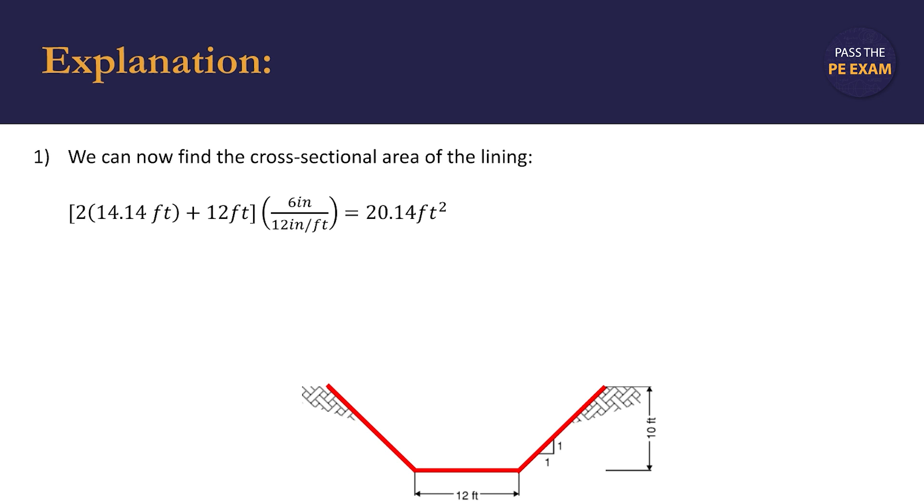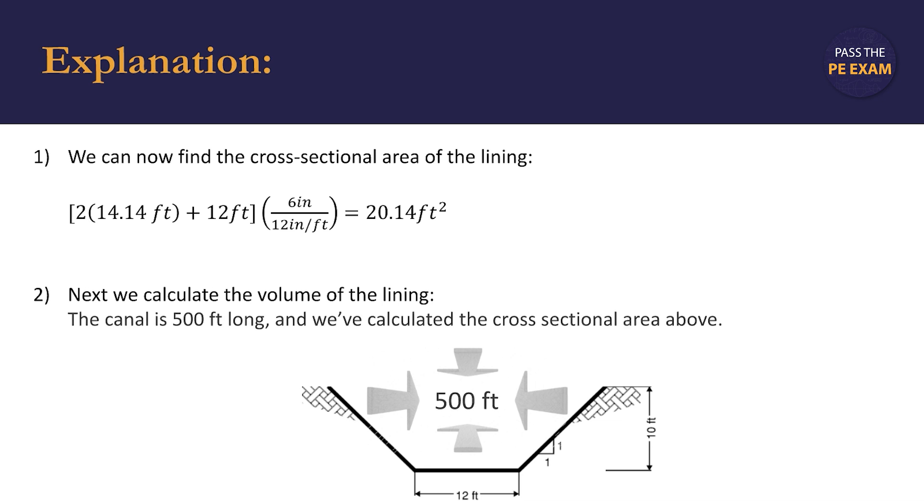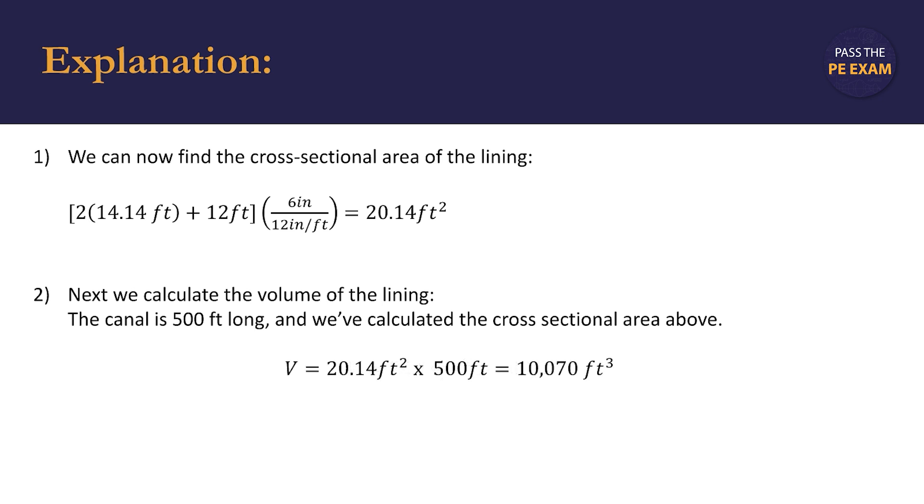Using this cross-sectional area, we can calculate the volume of the lining. We are told that the canal is 500 feet long and we've just calculated the cross-sectional area above, so our volume is equal to the area times the length. The area is 20.14 square feet and the length is 500 feet. So multiplying those two, we arrive at a volume of 10,070 cubic feet.